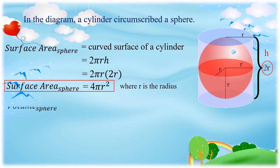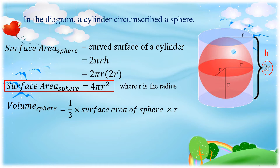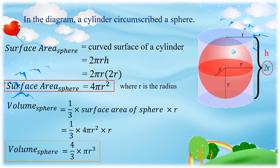Now let us find the volume of a sphere. For the volume of a sphere, we have one-third times the surface area of the sphere times R. Substituting the surface area, which is 4πR squared, we get four-thirds times πR cubed. That is the volume of the sphere.